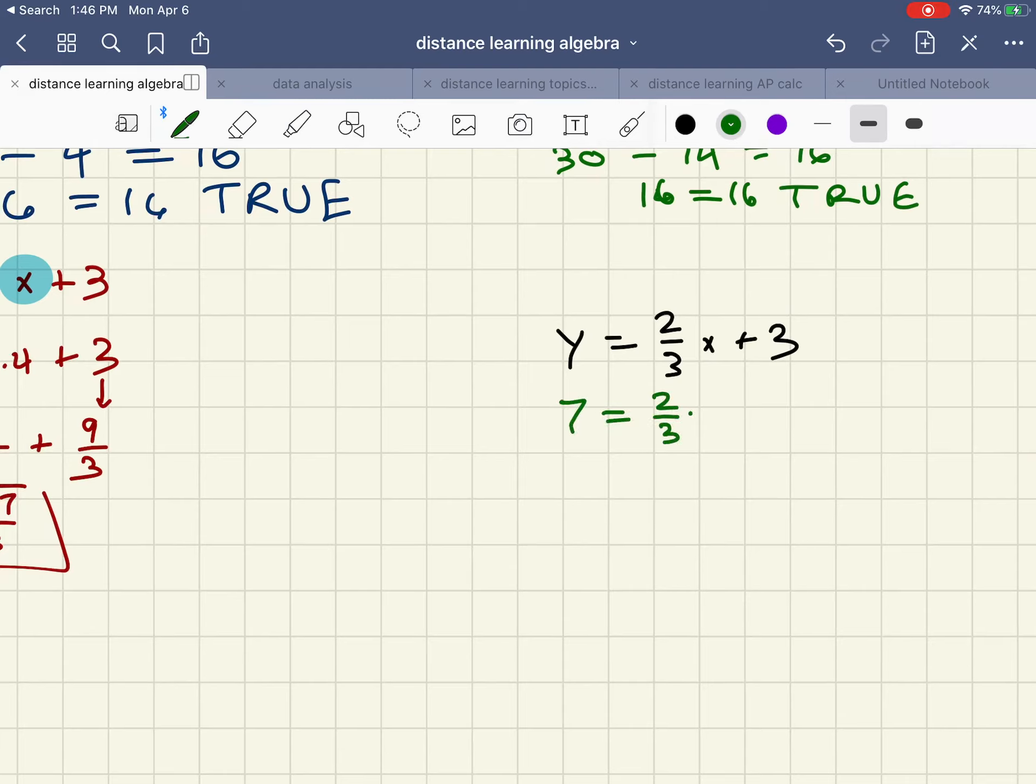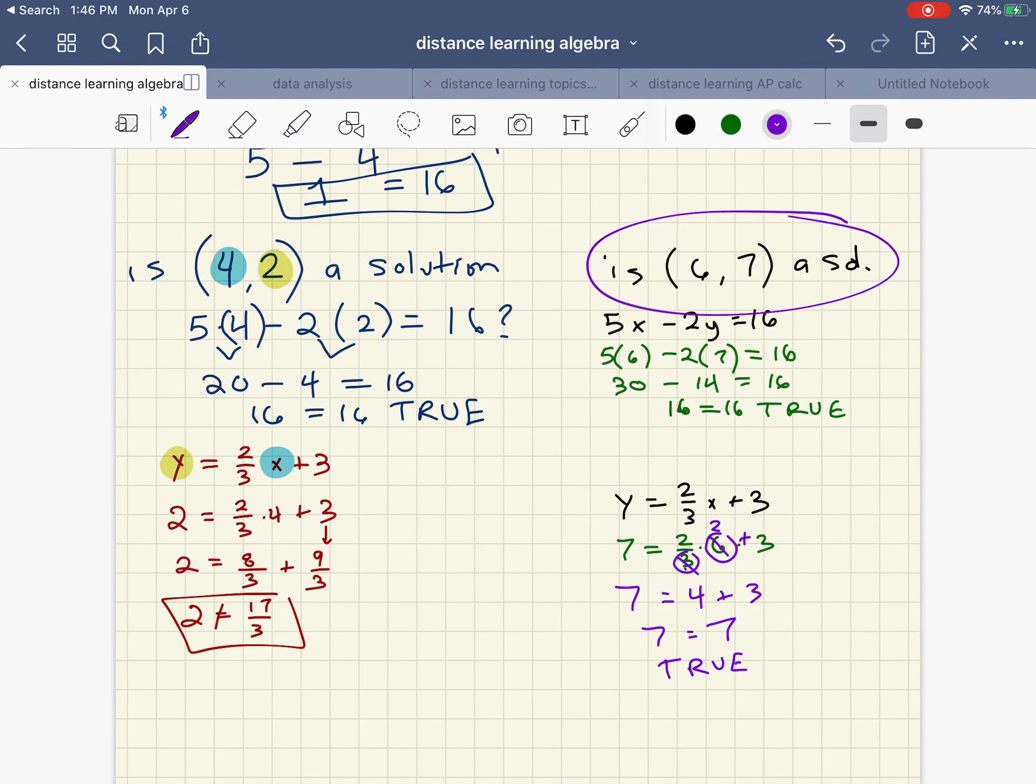Again, 7 for the y, 6 for the x. A little cross canceling here. 7 equals, the 6 reduces down to a 2, the 3 is gone, 2 times 2. 7 equals 7, and that is also true. So we have a solution right here. (6,7) is a solution. So we would say yes, (6,7). The other ones would be no, it has to work for both.